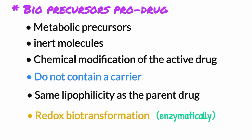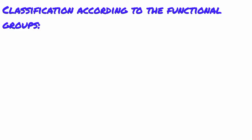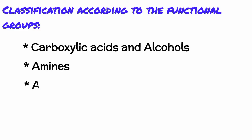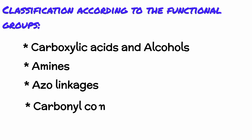Pro-drugs are also classified according to the functional groups. They are carboxylic acids and alcohols, amines, azo-linkages, and carbonyl compounds.